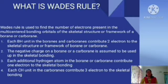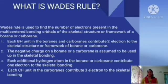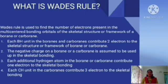In this session, I am discussing Wade's rule, which is useful in finding the number of skeletal electrons or framework electrons present in these boranes or carboranes. When we take a borane or carborane, we arrange it in terms of CH as well as BH units. Each BH unit contributes 2 electrons for the skeletal structure or framework. Each CH unit in a carborane contributes 3 electrons for the skeletal structure.